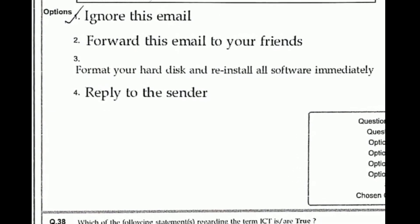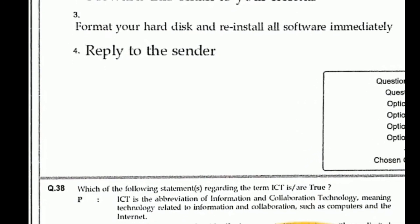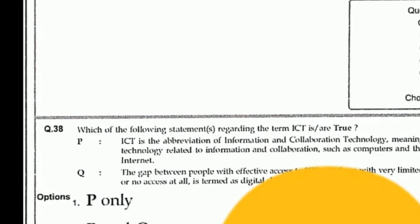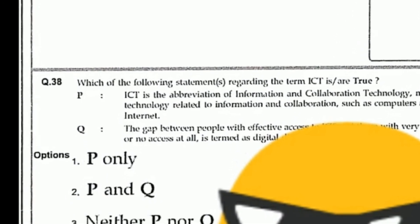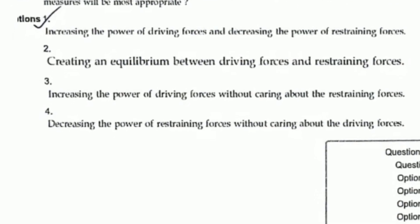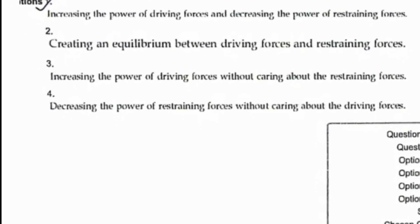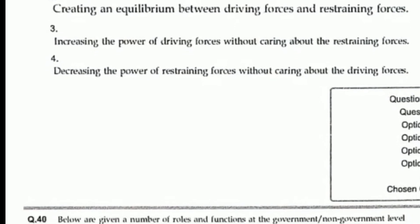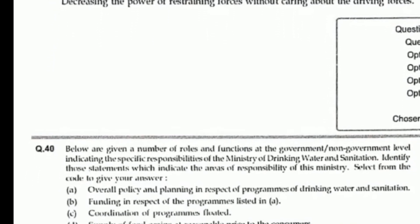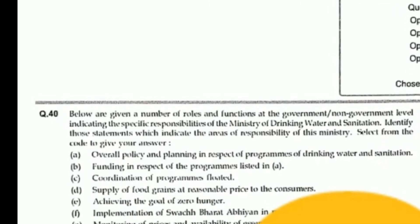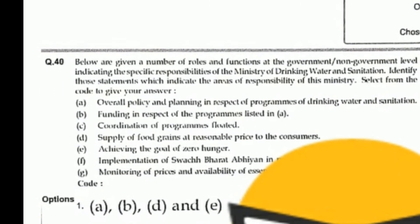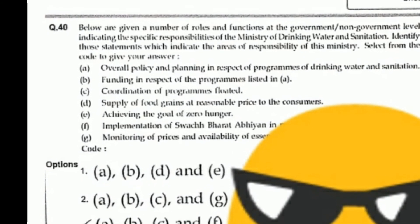A virus — ignore this email — is the right answer. Next question on ICTs: the right answer is option 4, Q only. For an effective organization, option one is the right answer. Question number 40, below given a number of roads: the right answer will be option 3.